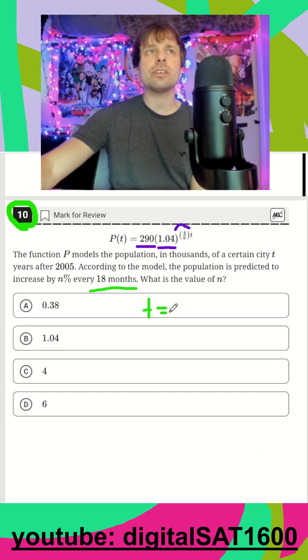If t is in years, when t equals 1, that would be 1 year or 12 months. So I just have to think, if 12 months is 1 for t, what would 18 months be? That's just going to be t equals 1.5.